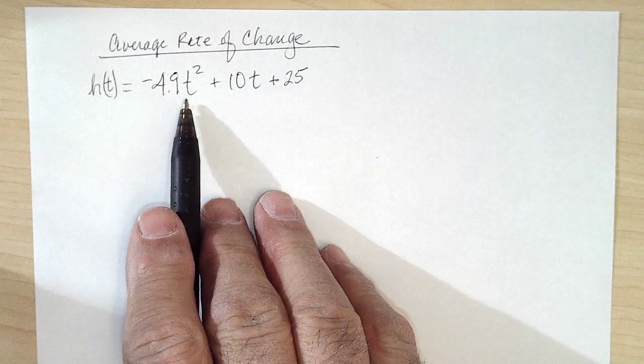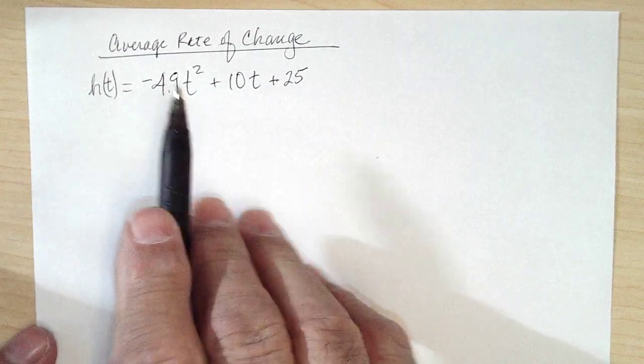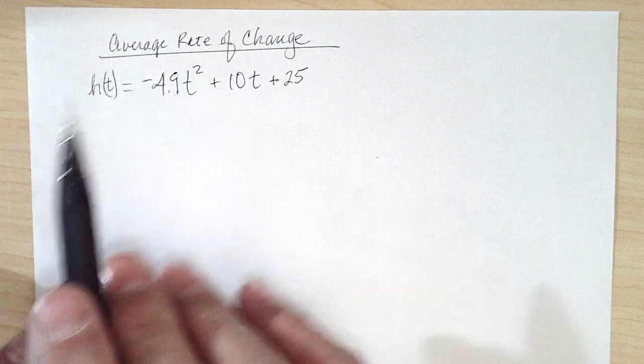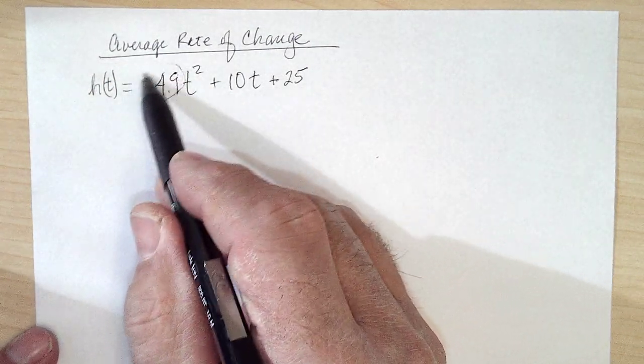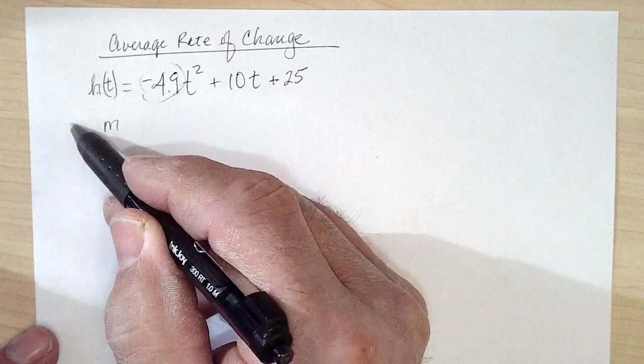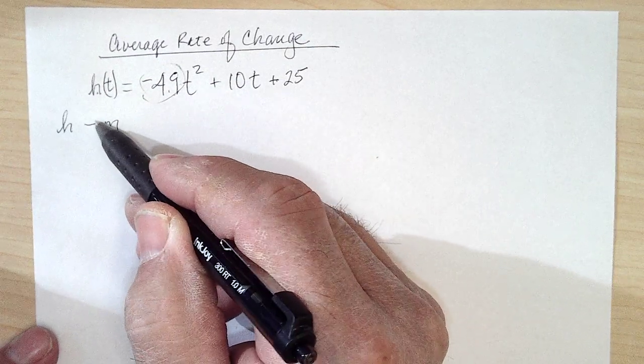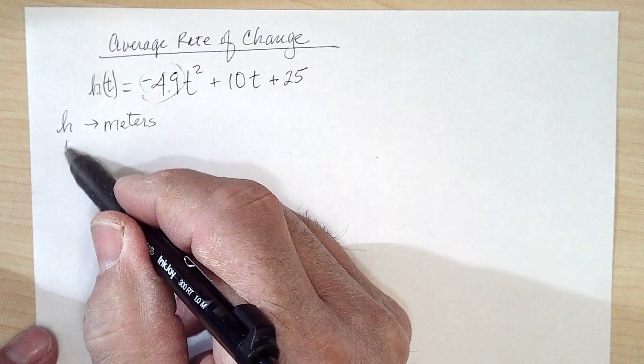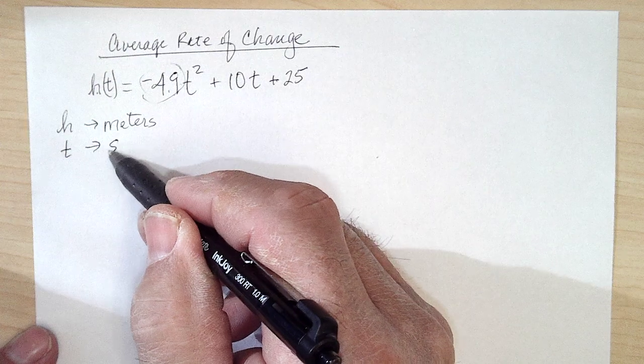We know the units from what we've talked about before. Since it's -4.9t², that number tells us the height is measured in meters and the time is measured in seconds.